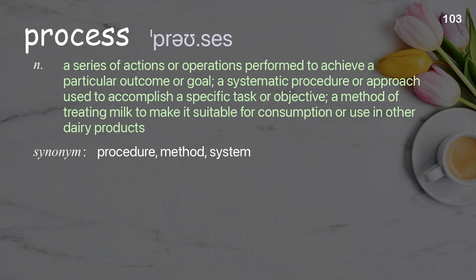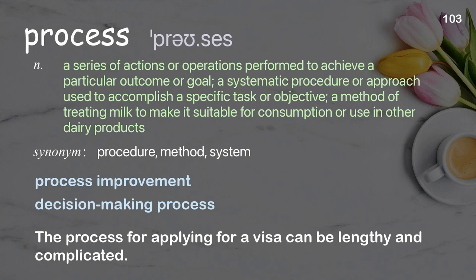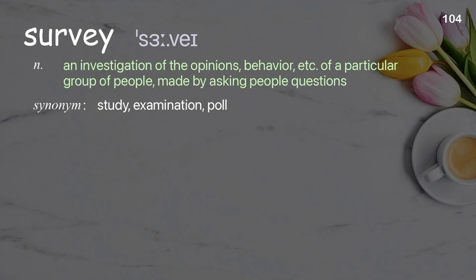Process: a series of actions or operations performed to achieve a particular outcome or goal; a systematic procedure or approach used to accomplish a specific task or objective. The process for applying for a visa can be lengthy and complicated.